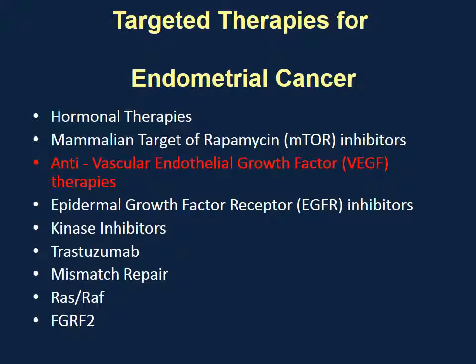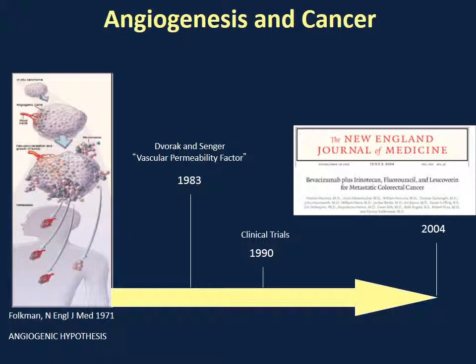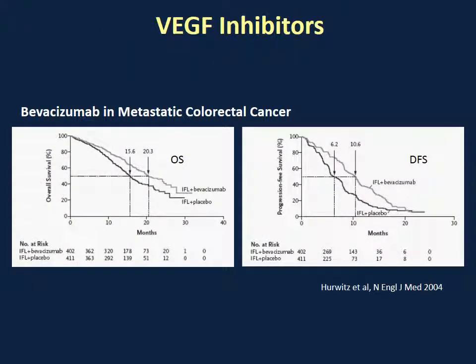The next pathway we are looking at involves anti-vascular endothelial growth factor, or VEGF, therapies. You may have heard of drugs called Bevacizumab or Avastin. It is very active in colon cancer, as published in the New England Journal, and data show that these patients lived longer, with higher overall survival and disease-free survival. This particular drug, Avastin, has been approved as a single agent for endometrial cancers.